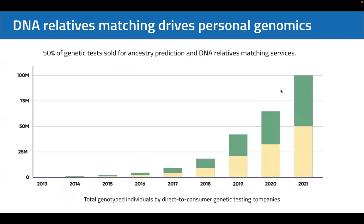Classifying the degree of relatedness between pairs of individuals has both commercial and scientific applications. From the commercial perspective, DNA Relatives Matching Service is one of the leading drivers for the direct-to-consumer genetic testing market. Today, more than 50% of genetic tests are sold for ancestry prediction and DNA Relatives Matching products. From the scientific perspective, DNA Relatives Matching is an important stage during genome-wide association studies and genetic linkage analysis.